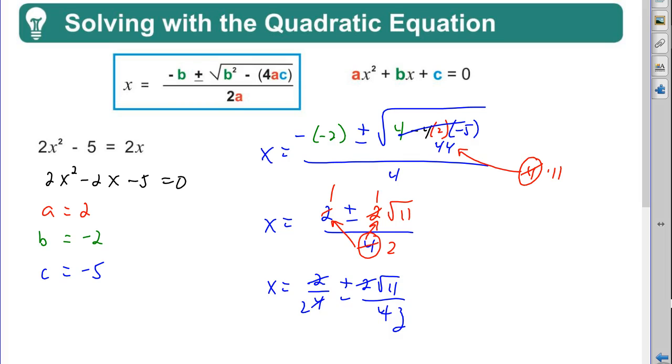I got to clean this up. So this is x equals 1 plus or minus the square root of 11 over 2. Or I could put it in the form x equals 1 half plus or minus the square root of 11 over 2. Both are the same thing. A little bit different form, but using the quadratic equation.